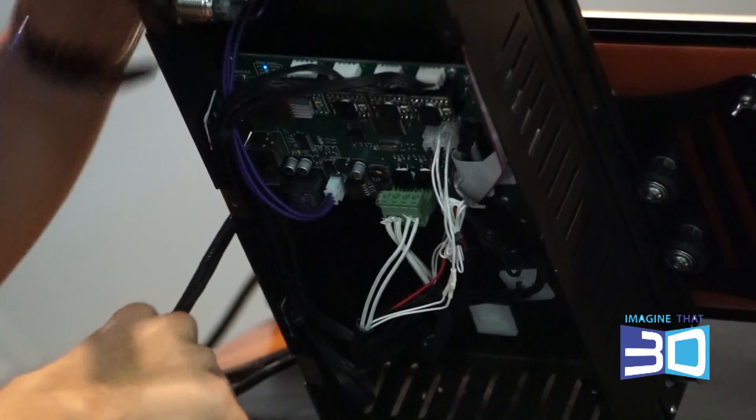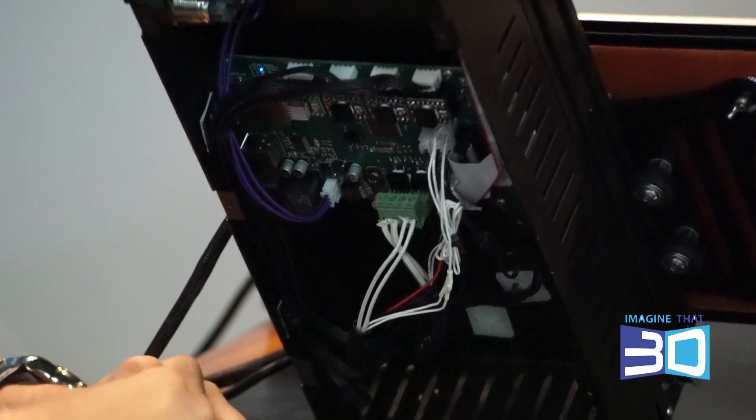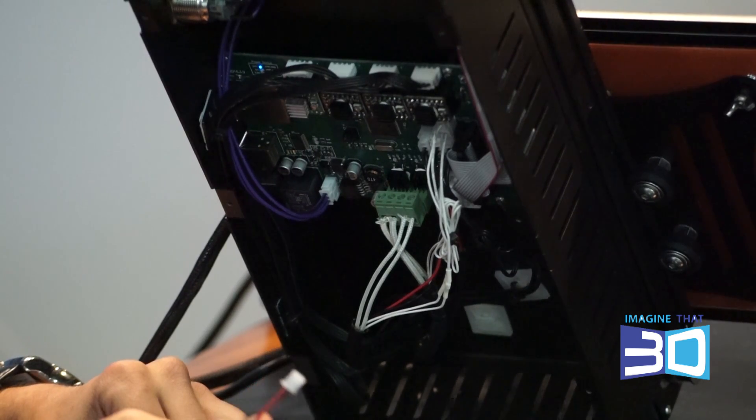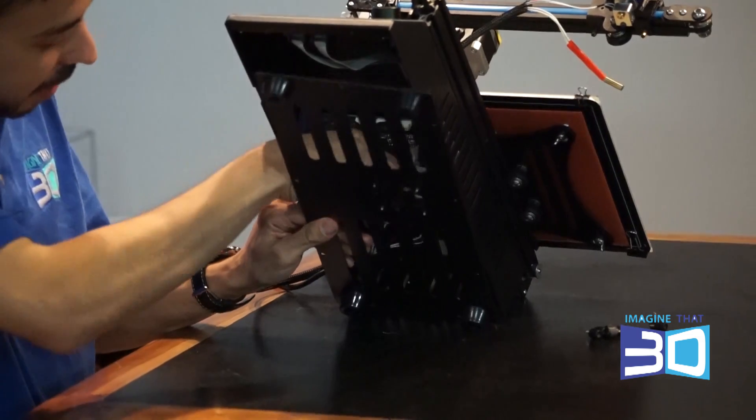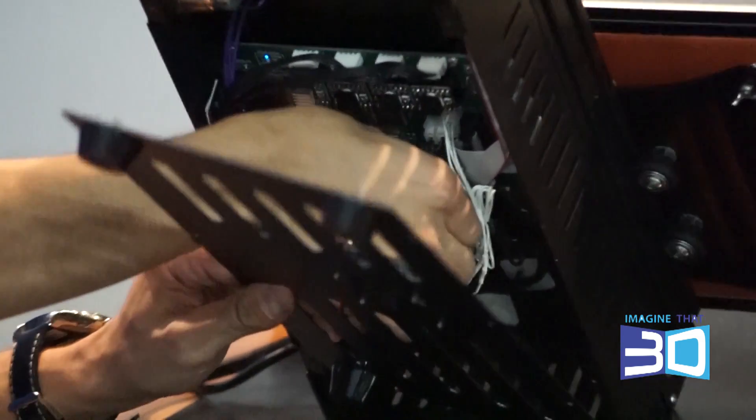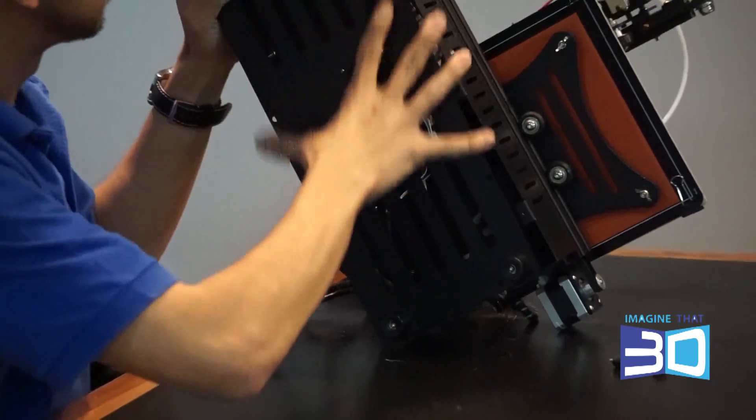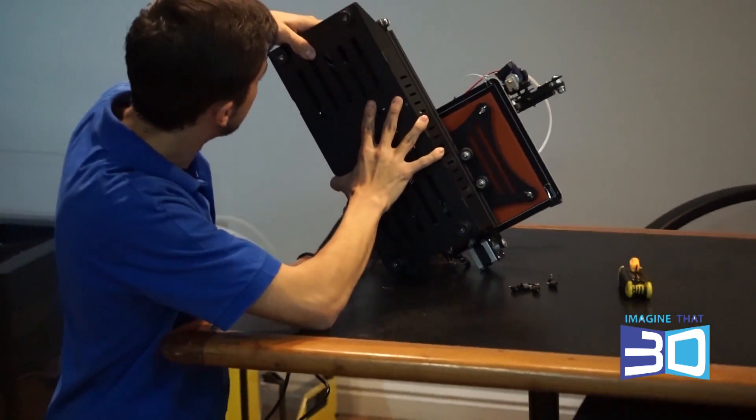Okay, now that we know it's working, let's go ahead and put everything back together. First thing is first, let's plug our fan in. Pretty simple, we're just going to slide it up, plug it into this little pin, and now we're ready to start screwing our printer back together, which is fairly easy to do.